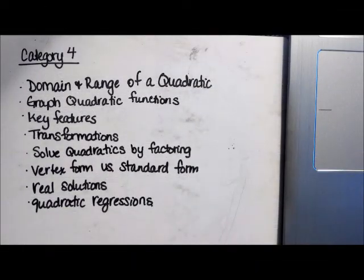Quick recap of Category 4. Category 4 is what we just finished up in class: domain and range of quadratics, graphing quadratic functions, key features, transformations, solve quadratics by factoring, vertex form and standard form, real solutions and quadratic regressions.